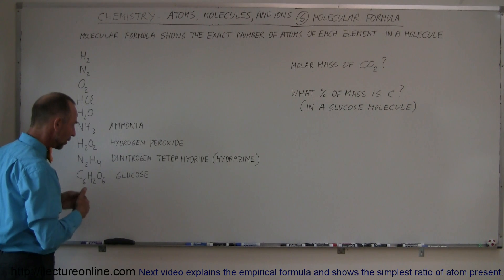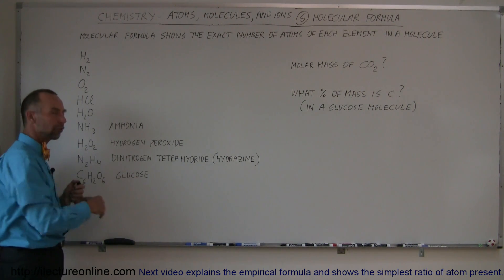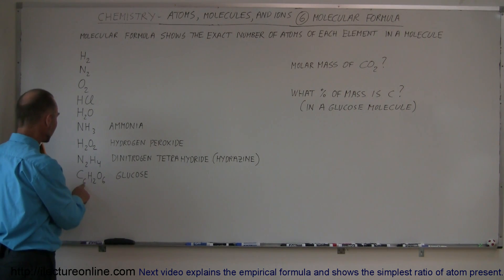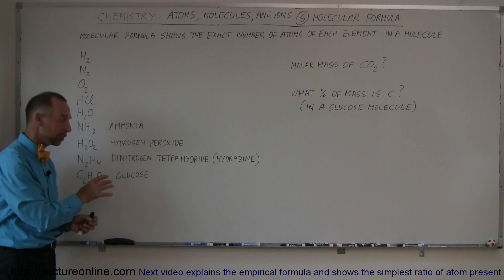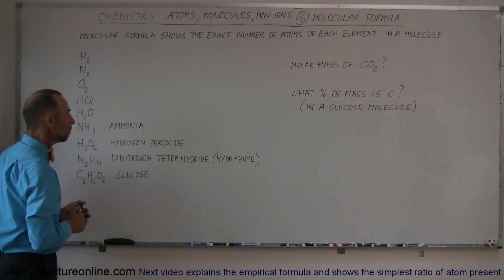Here we have something that we use for the human body, glucose. It's a form of sugar. It has six carbon atoms, twelve hydrogen atoms, and six oxygen atoms all together. So there's a total of 24 atoms in this single molecule.